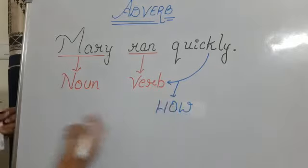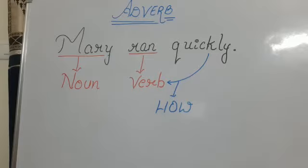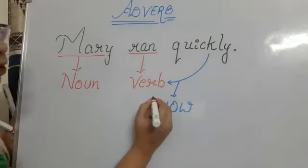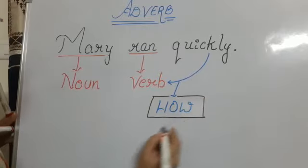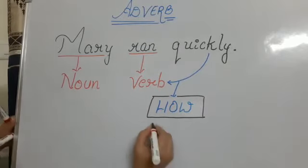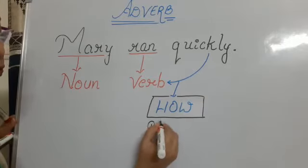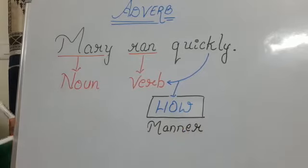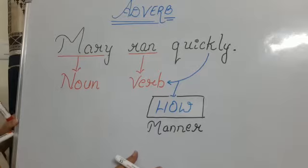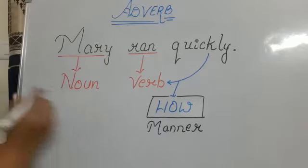Now, quickly here is showing how the work has been done. How means it is showing the manner of the verb. How it has been done? It has been done quickly. So it is showing the manner of the verb. M-A-N-N-E-R, manner means the way of being performed, the way of the work being performed.